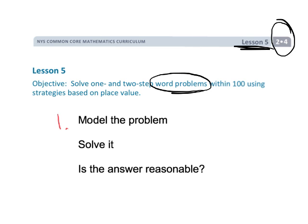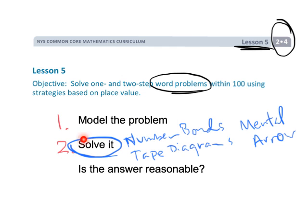Step one is to use tape diagrams to model the problem. Step two is to solve it — students can use number bonds, tape diagrams, mental math, or the arrow method. The idea is to solve it in any way they can, because at this point they've modeled the problem and know exactly what to do. Then step three: stop and look back and ask whether the answer is reasonable, using estimation.